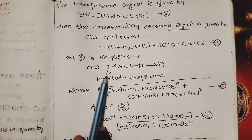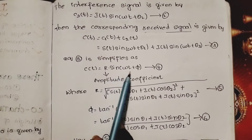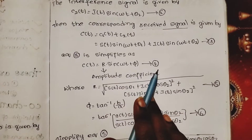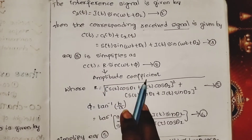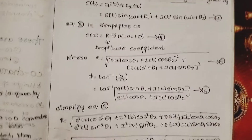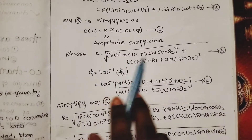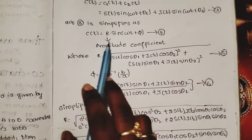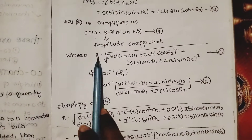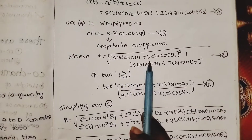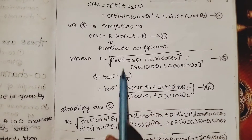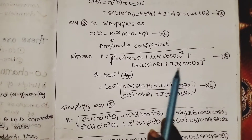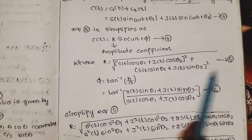C(t) is equal to R · sin(ωt + φ). That means we have the fourth equation. We solve for the R value, which is the amplitude coefficient, denoted R.